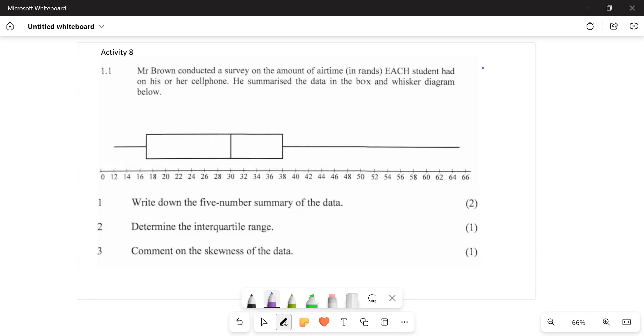Now on the box and whisker diagram, you don't have the data, you don't have the whole thing, you just have the summary. So what do you have on your five-number summary? The first thing we should be able to have is the minimum based on what we see here. What is the minimum value?